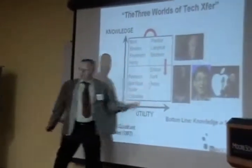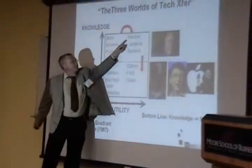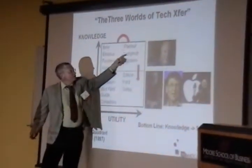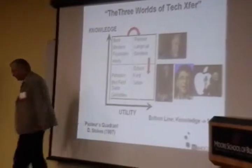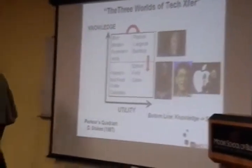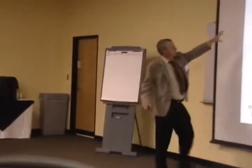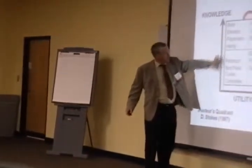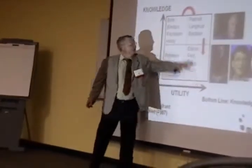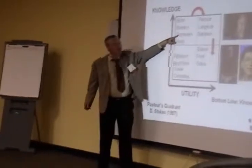And that's why the book is called Pasteur's Quadrant. Up here we have people like Pasteur, Langmuir, and Bardeen, and others who have produced an enormous amount of knowledge, and there's also tremendous utility. And of course, that also happened to some of these other guys.